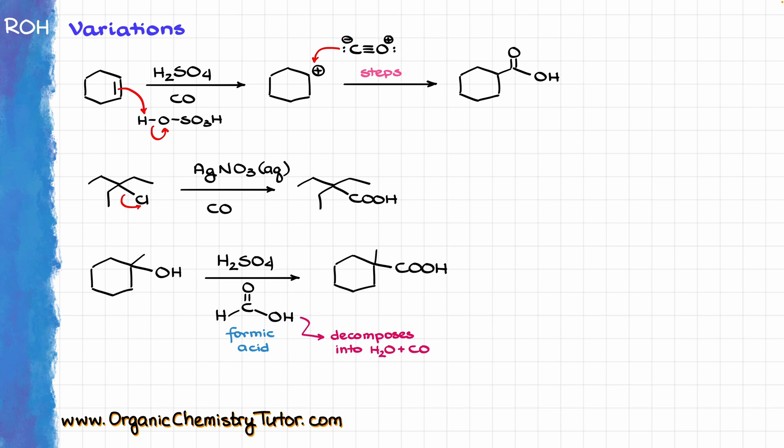The biggest problem here is the formation of the carbocation, and as we know, when it comes to carbocations, we have all possible problems associated with that, mainly rearrangements. In this video, I didn't show any examples with rearrangements, but you can imagine that as soon as we have a carbocation, especially if we attempt to make a carbocation on primary or secondary position, that is a recipe for disaster. Even tertiary carbocations could potentially rearrange, so generally speaking, this reaction doesn't give very good yields and is only suitable for industrial use because of those limitations.